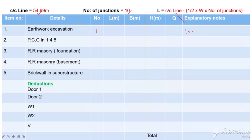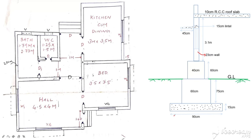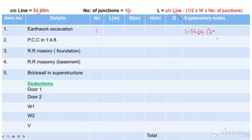We use the formula: length is equal to centerline length 54.69 minus half width. The width we need to calculate the length for earthwork excavation is 90 cm, so 0.9 m, into number of junctions, which is 10.